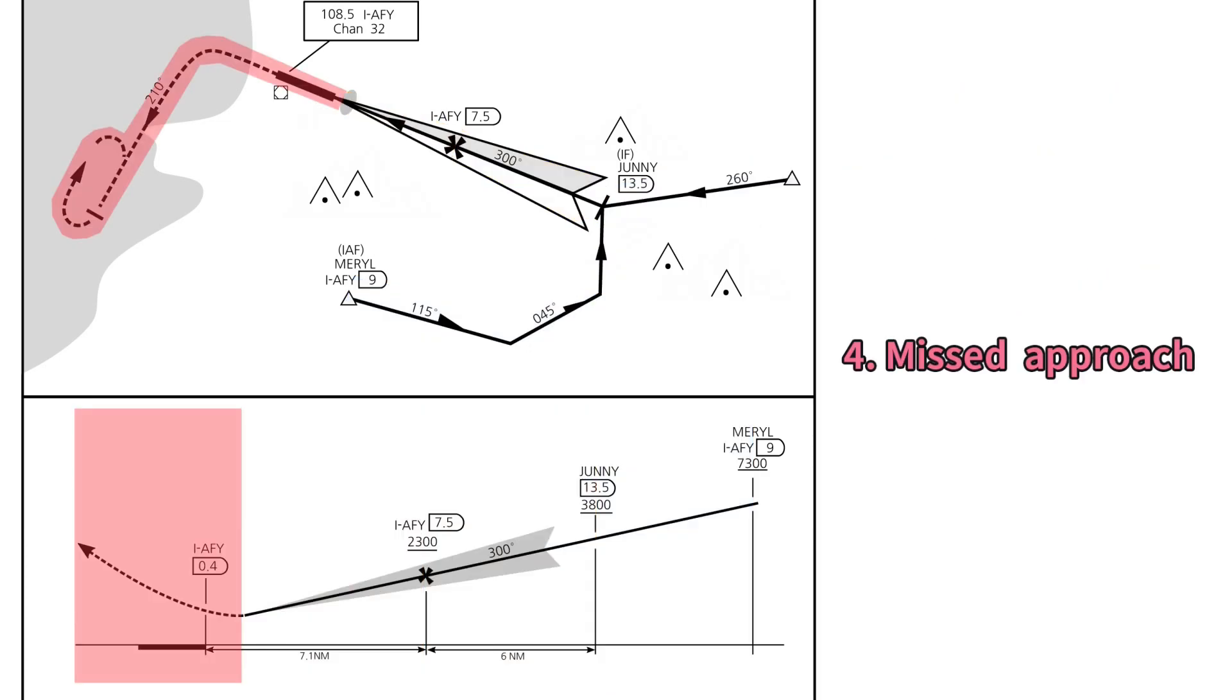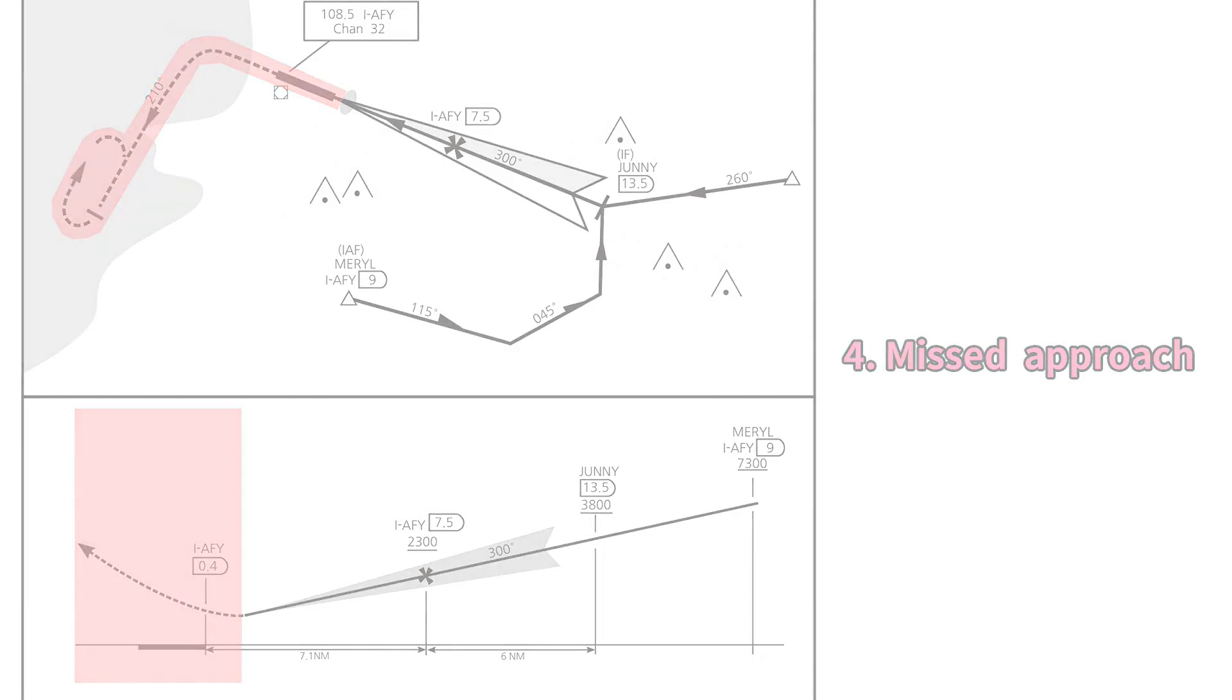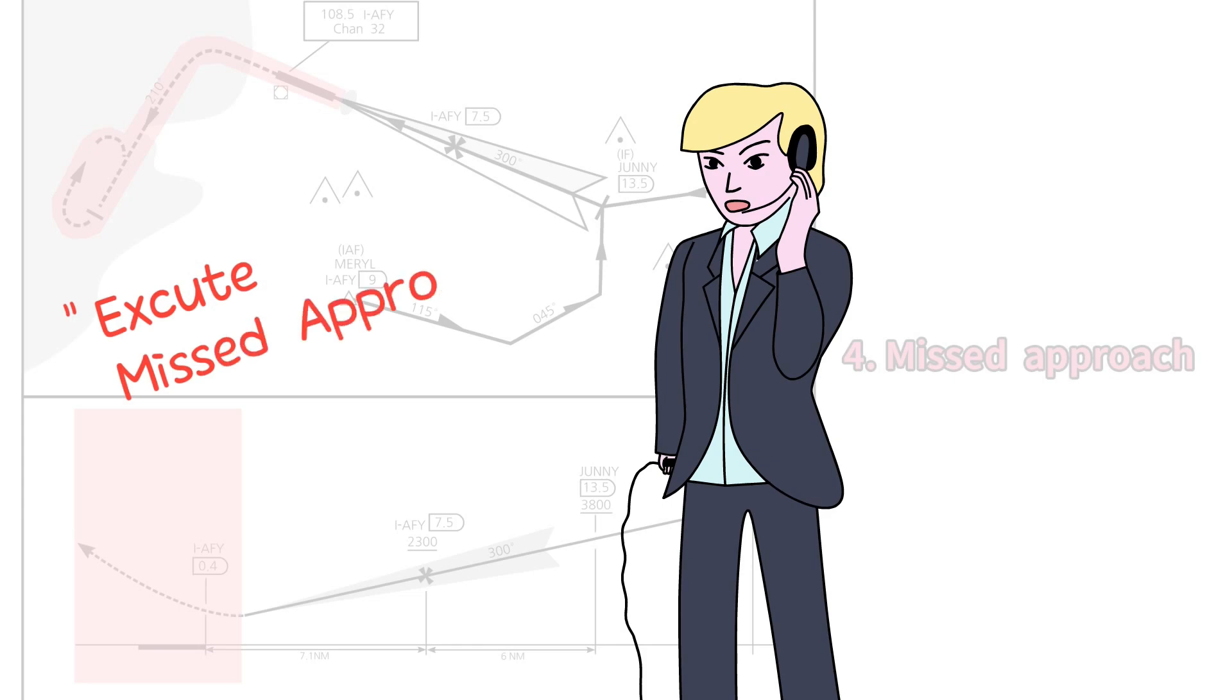Here, missed approach means the stage of ascending again after failing to land, and the controller and pilot sometimes use the term missed approach instead of go-around when the instrument flying aircraft makes a go-around.